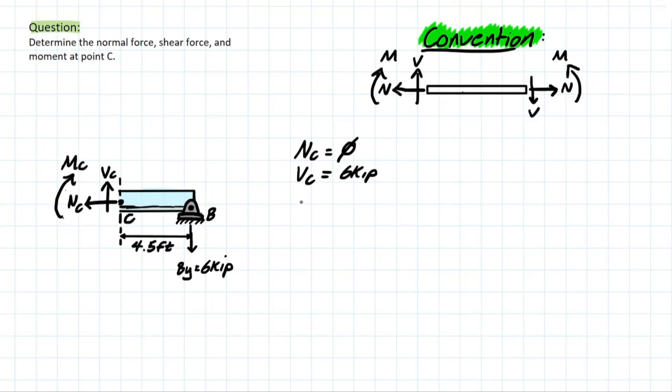And we have finally the moment to solve for, which we have to take the moment from C so that we can solve for the reaction. So if we take the moment at C following our convention, we have a negative moment at C minus the BY, which is what? Six kips times 4.5 feet.